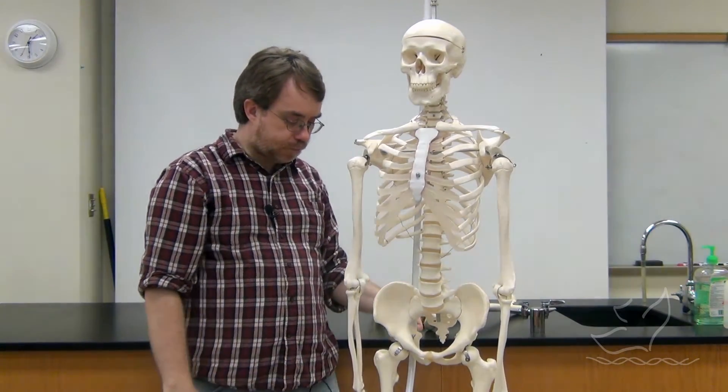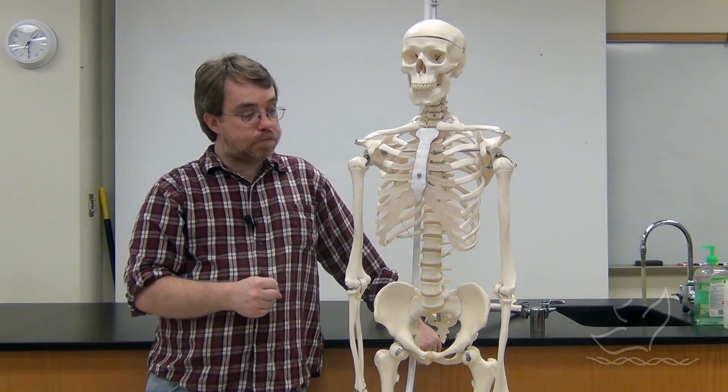Now remember, none of this tells us anything about the image of God. None of this tells us anything about whether something is human or not. All it tells us is these are features that are found in chimpanzees that are different than the features that are found in modern humans. That is some of the differences between the modern human skeleton and the modern chimpanzee skeleton. Now we want to have a look at some of those same features in creatures that we find in the fossil record.